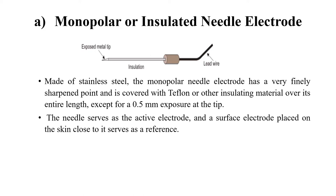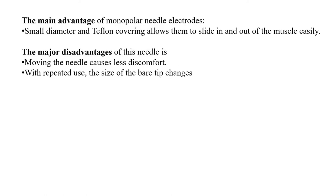The figure shows the monopolar needle electrode, also called the insulated needle electrode. It consists of a solid needle made of stainless steel with a sharp point. The shank of the needle is insulated with a coating of Teflon or other insulating material, covering its entire length except for 0.5 mm of the tip, which is left exposed. A lead wire is attached to the other end of the needle, and the joint is encapsulated in a plastic hub to protect it. The needle serves as the active electrode, and a surface electrode placed on the skin close to it serves as the reference.